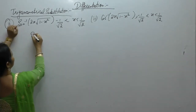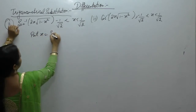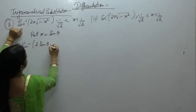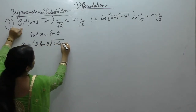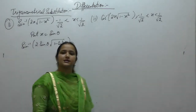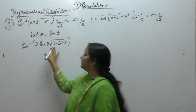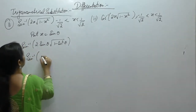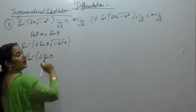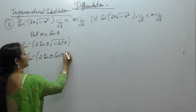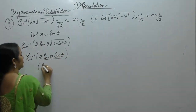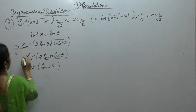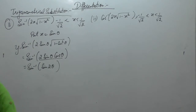Put x equal to sine theta. So we get sine inverse of 2 sine theta times square root of 1 minus sine squared. Using the identity sine squared plus cos squared equals 1, so 1 minus sine squared is cos squared. Square root of cos squared gives cos theta, and 2 sine theta cos theta is the formula for sine 2 theta. Let this function be y, so y equals sine inverse of sine 2 theta.